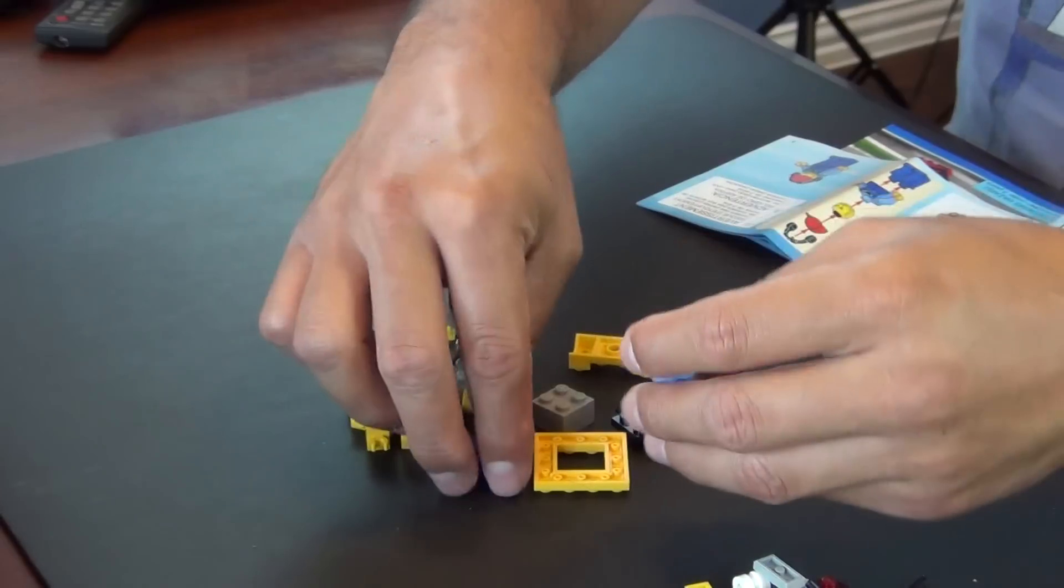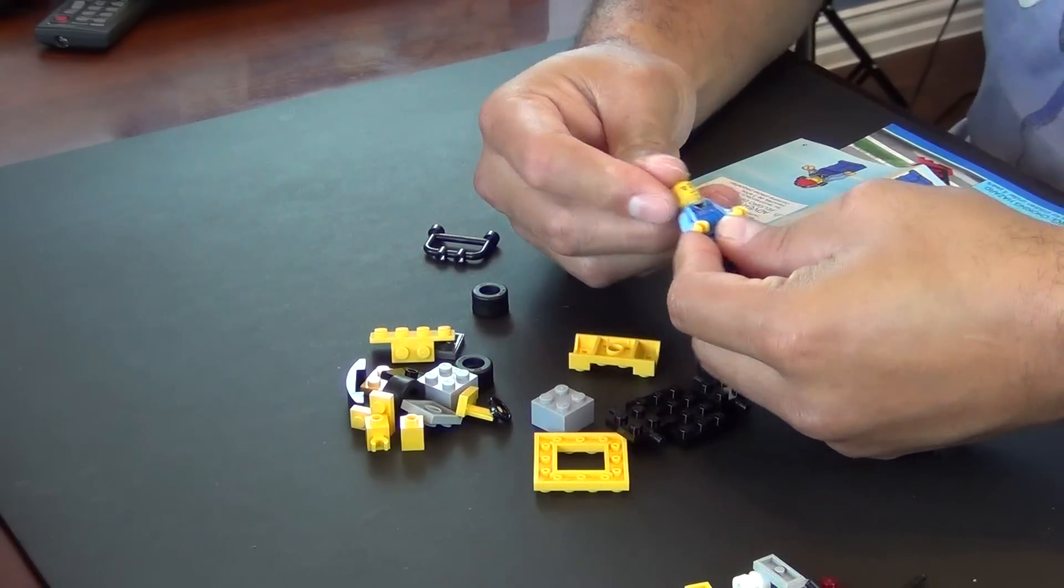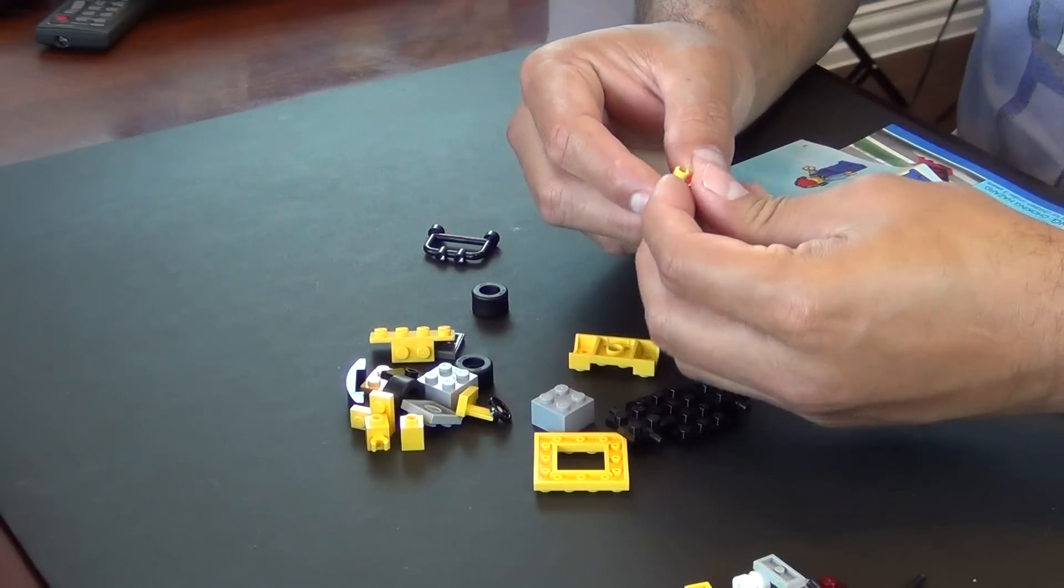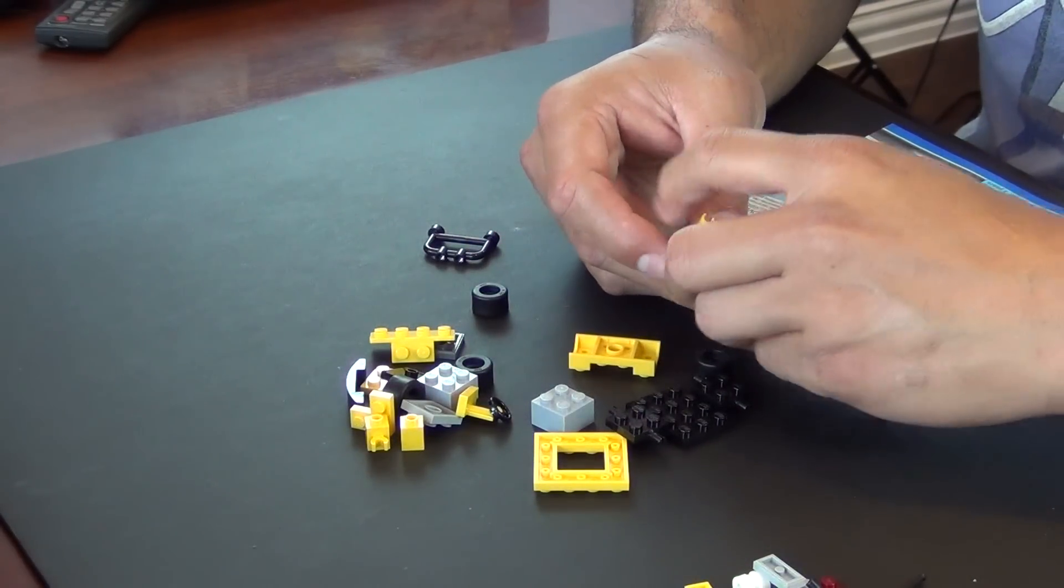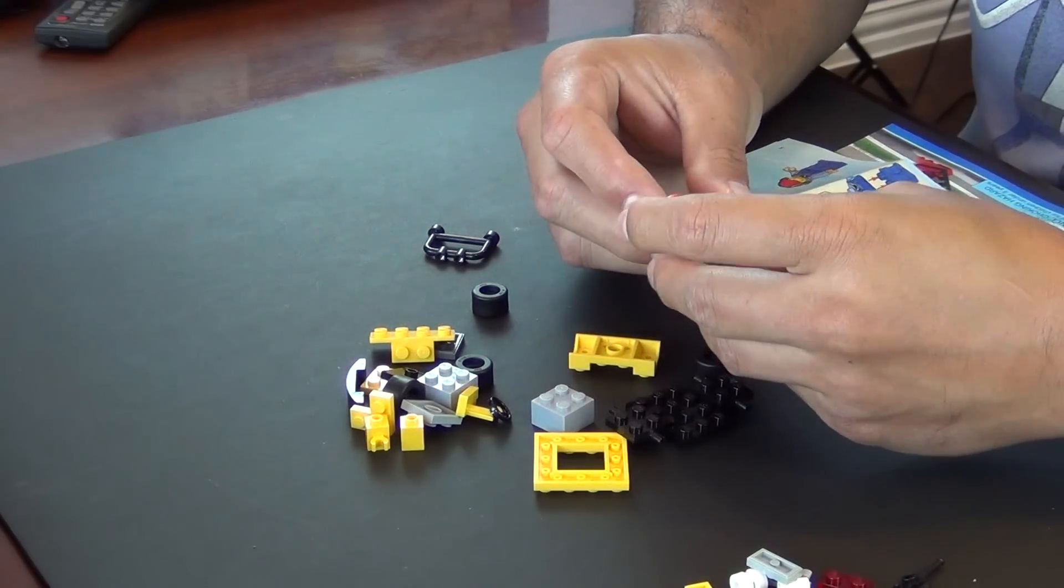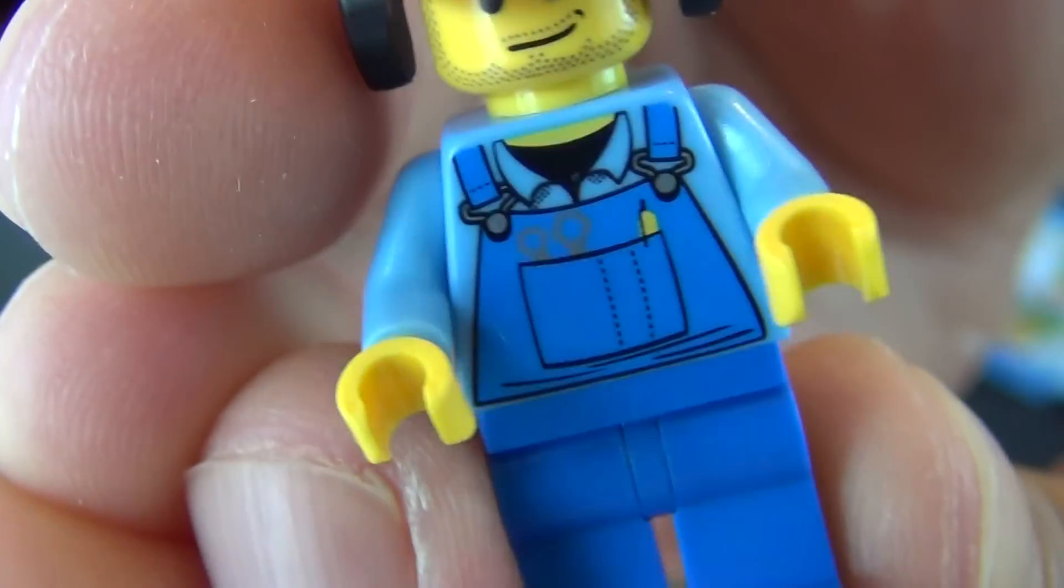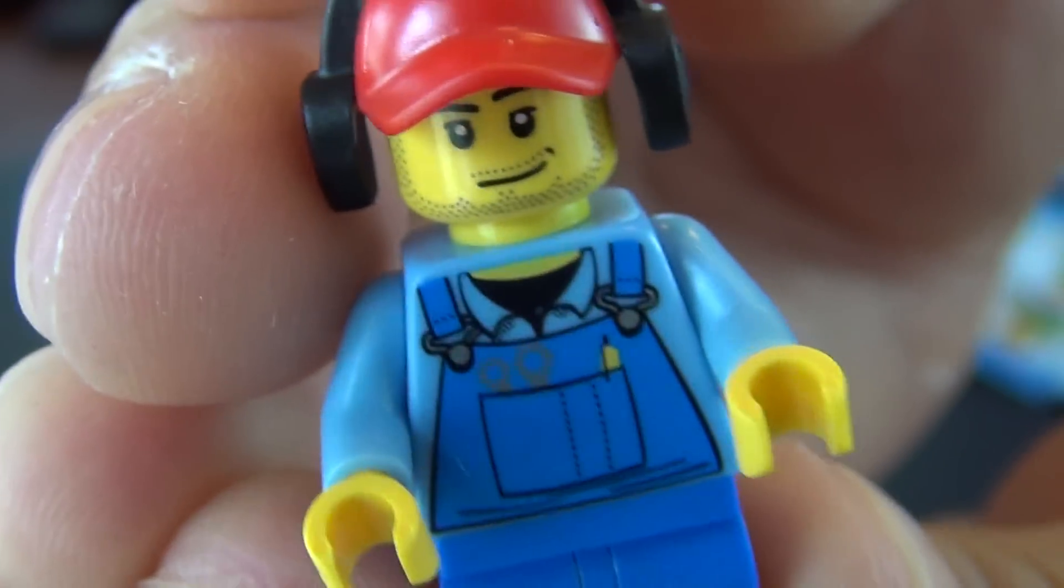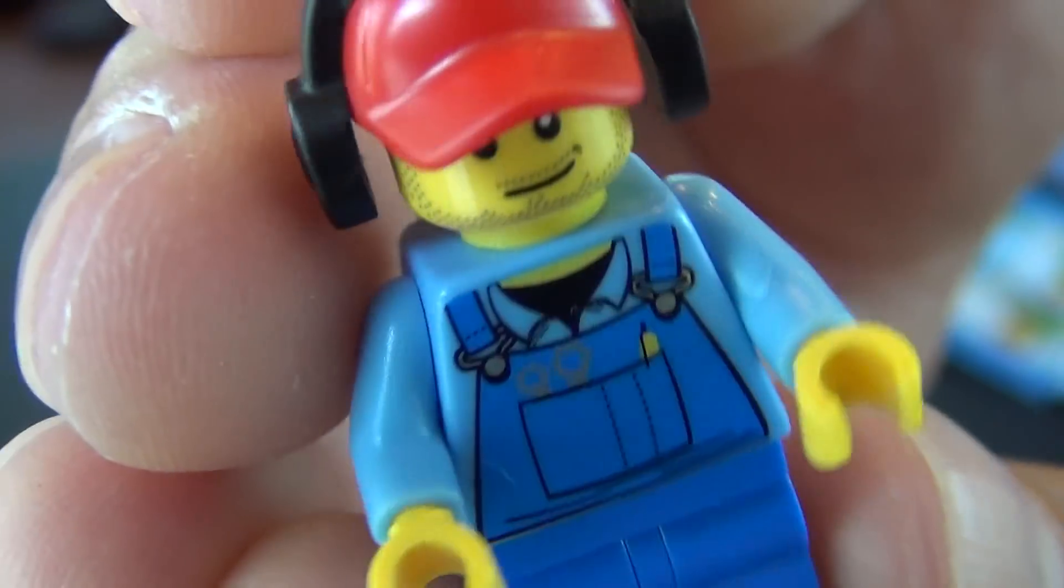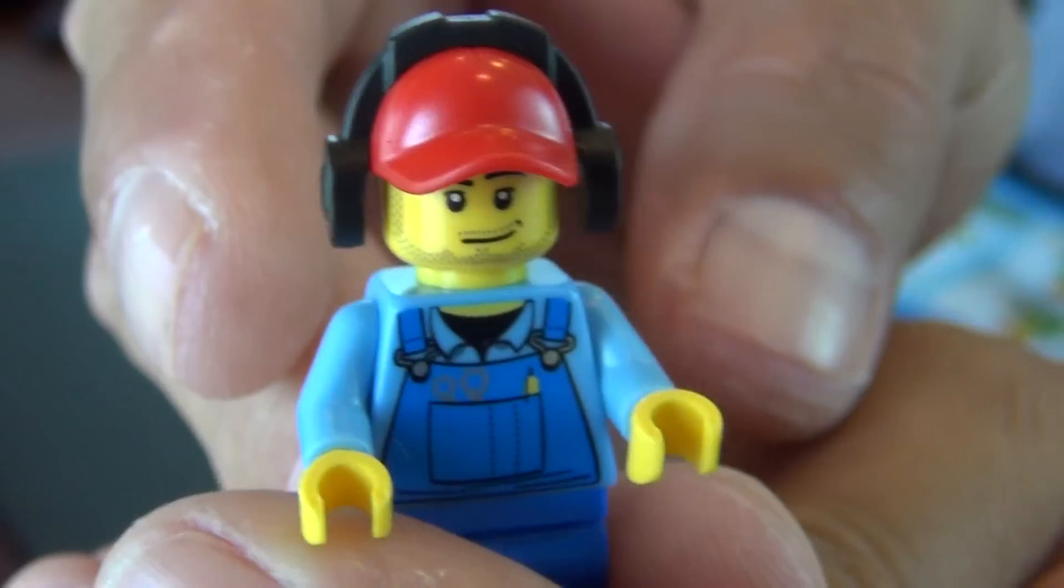Let's build the minifigure. There's two minifigures in this. The first minifigure is the airplane worker. He's kind of cool, I guess. He's got the overalls on which are printed on his torso. You can see there's a pen and some tools in the pocket, that's all printed. He's got kind of some beard stubble, kind of a beard growing in. Kind of a little smirky face. Single printed head, nothing on the back. And then he's wearing his baseball cap with his ear protection. Not a bad little figure.